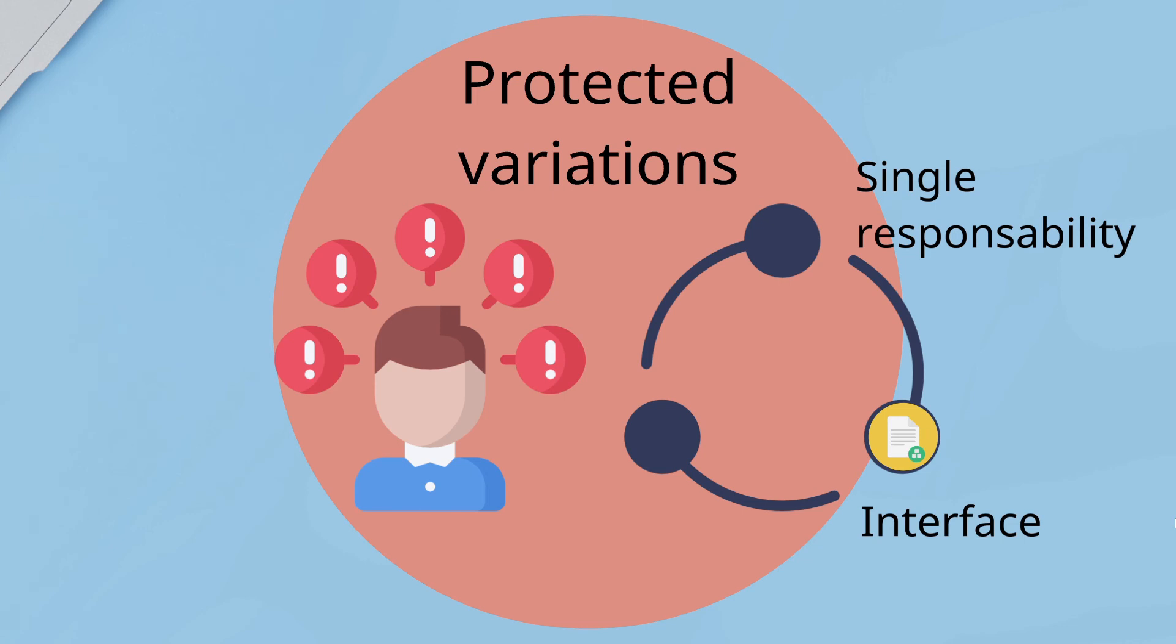This pattern helps us to avoid impact of variation of some elements on the other elements, provides flexibility and protection from the variations, and provides more structural design. An example of this is polymorphism, data encapsulation, and interfaces.